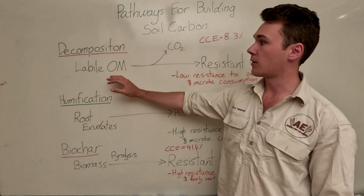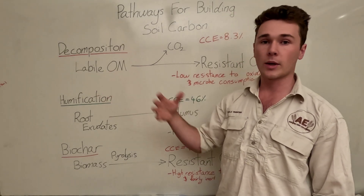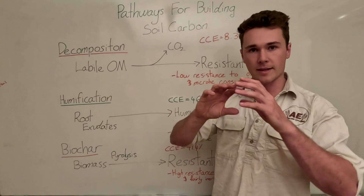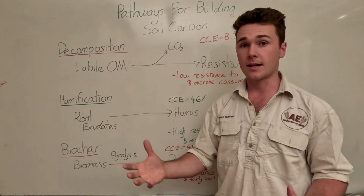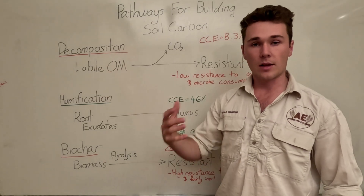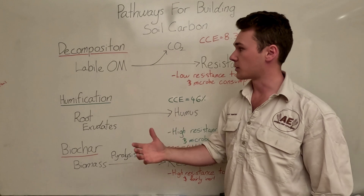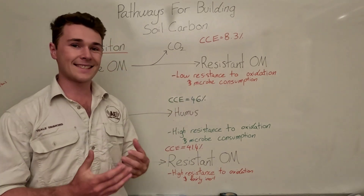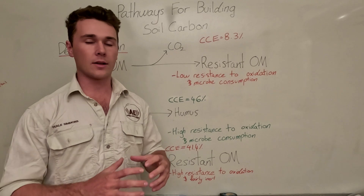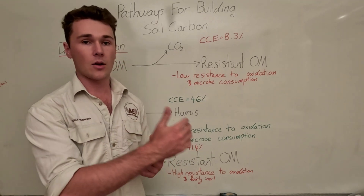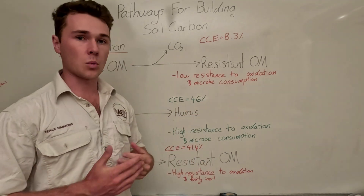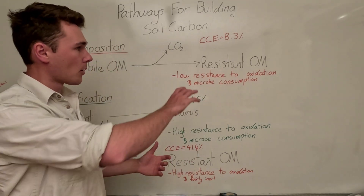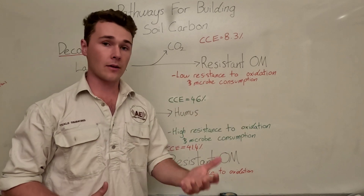The first pathway is building soil organic carbon through decomposition. This involves taking labile organic matter — biomass from plants, such as a cover crop that we kill — where the leaf material and roots break down. The available organic matter for microbial decay or consumption is called labile carbon. That is consumed by microbes, and in that process they produce resistant organic matter, which is the most basic or inert form of organic matter. It can't undergo further decomposition by microbes, and once it's in the resistant organic matter component of soil organic carbon it is very stable.